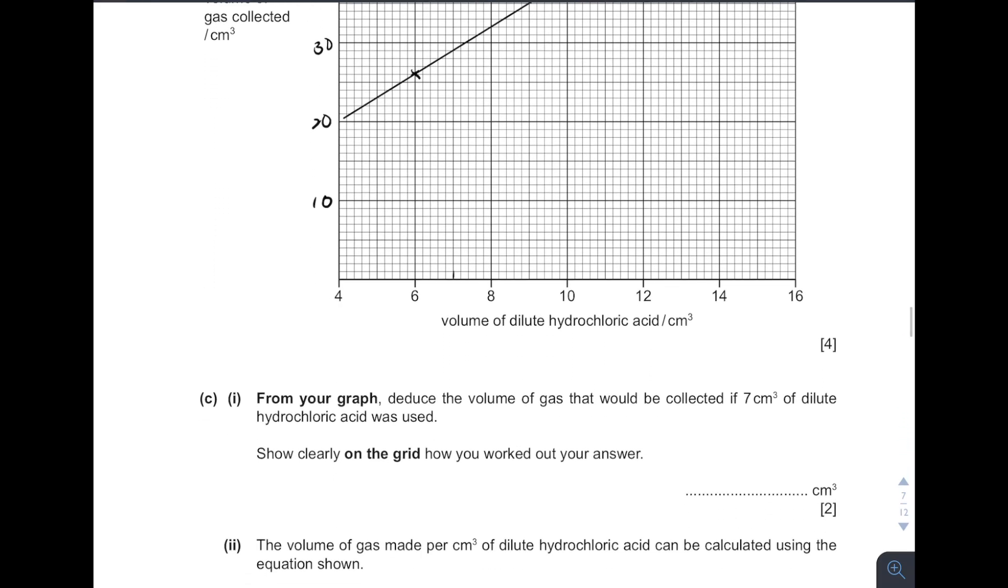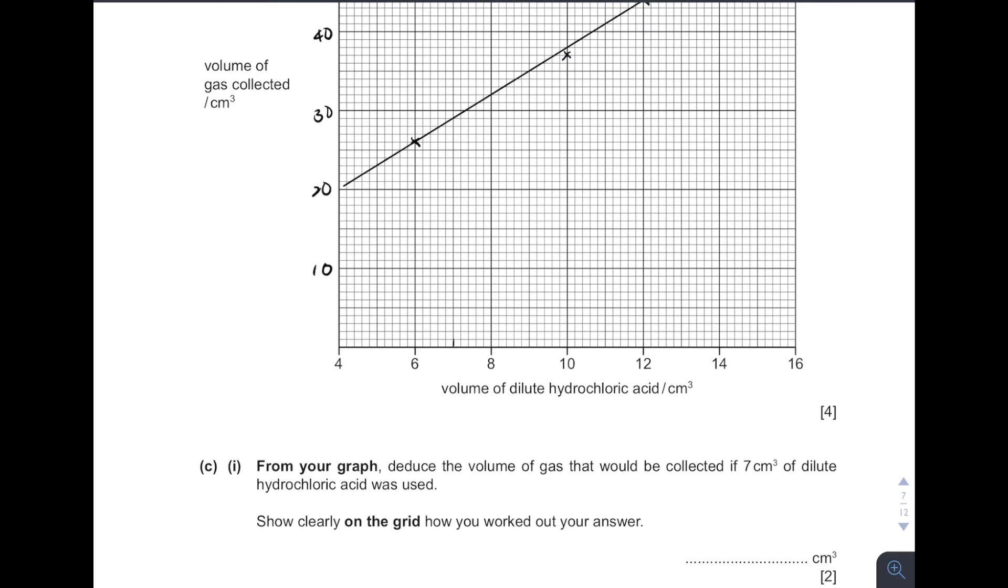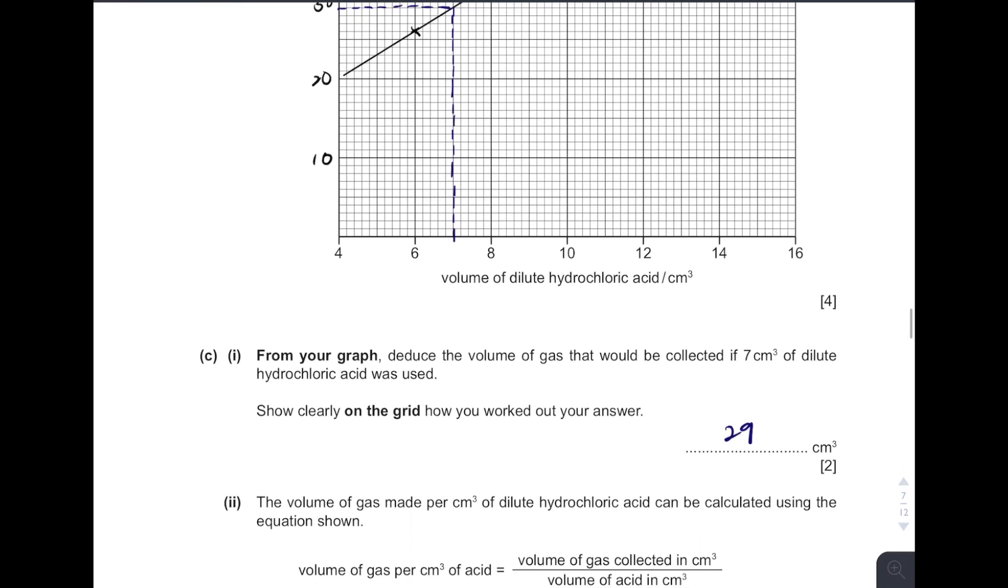Then, see, deduce the volumes of gas that will be collected if 7 cm3 of acid was used. So in your graph, you have to show how you get a result. So at 7, you have to draw dotted line. And dotted line from 7. So eventually, it is 29.